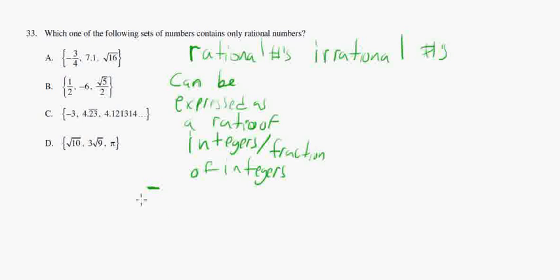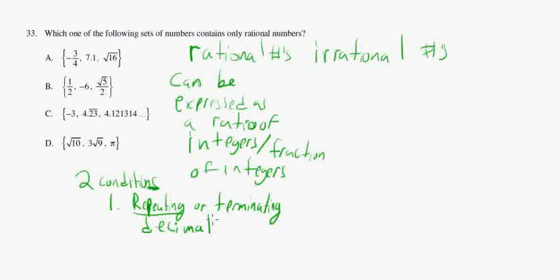So, the alternative definition is it has to have conditions to be rational. The first condition is that it has to have a repeating or terminating decimal. So, the decimal has to repeat or the decimal has to terminate. If it does one or the other, if the decimal repeats or the decimal terminates, then it is considered a rational number.